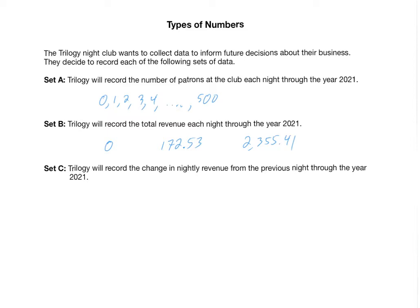There's another difference with Set C. Trilogy will record the change in nightly revenue from the previous night through the year 2021. Say one night they make $200, the next night $250, and the next night $225. The change in revenue between the first two nights would be an addition of $50, and from the second to the third would be a decrease of $25. So now you could have a negative change in nightly revenue, whereas negative doesn't make sense in either of the other two sets — you can't have a negative number of people, and the lowest revenue is zero.